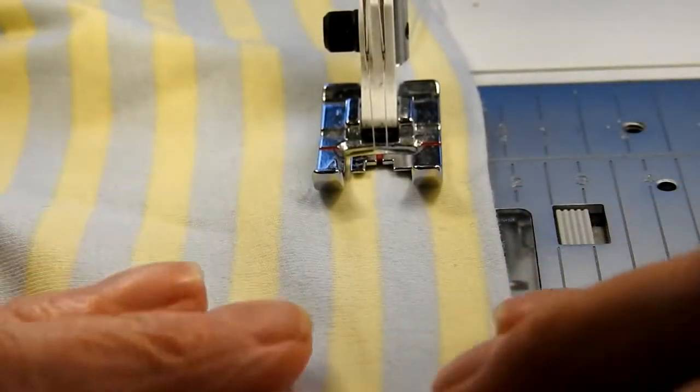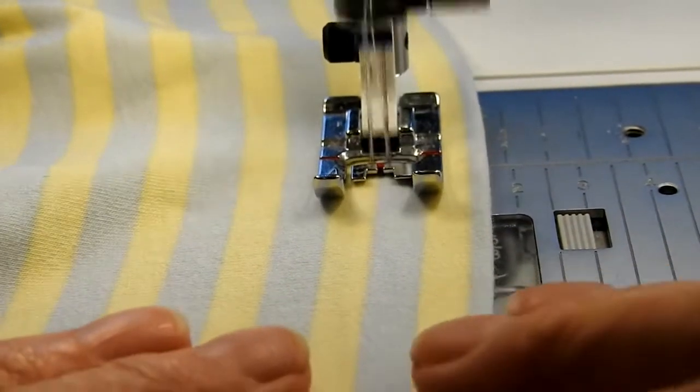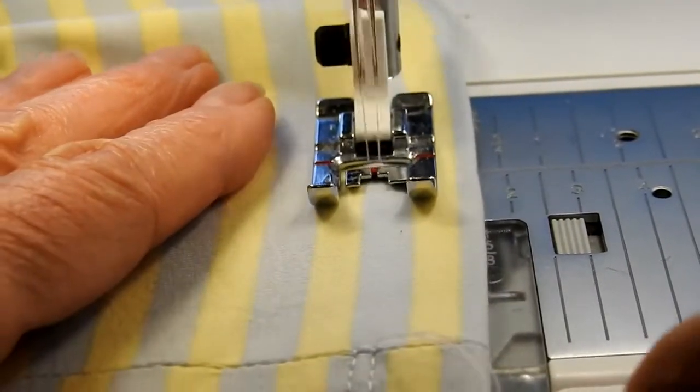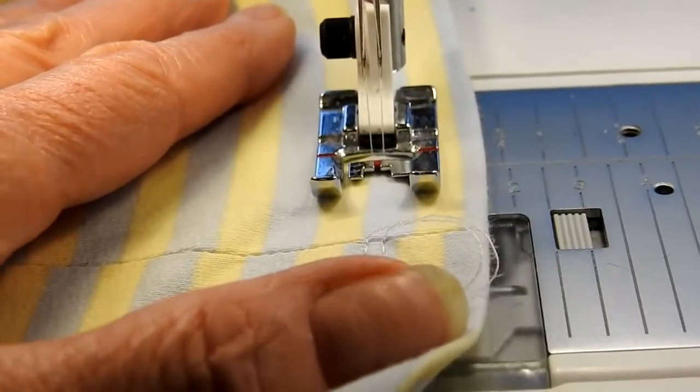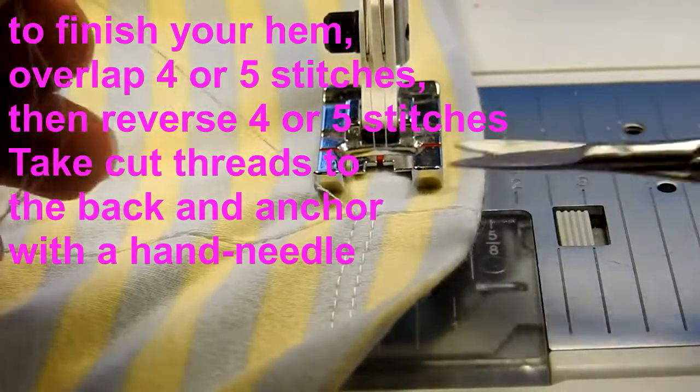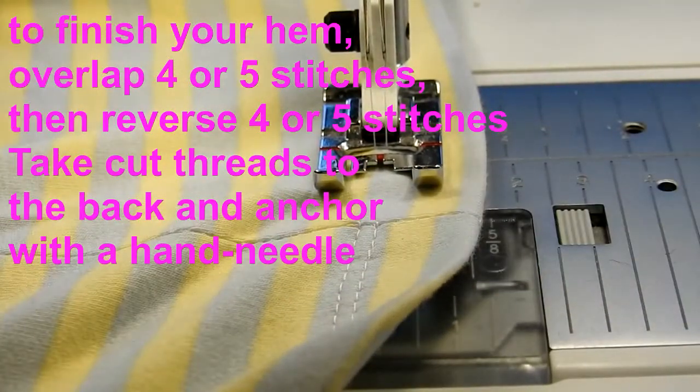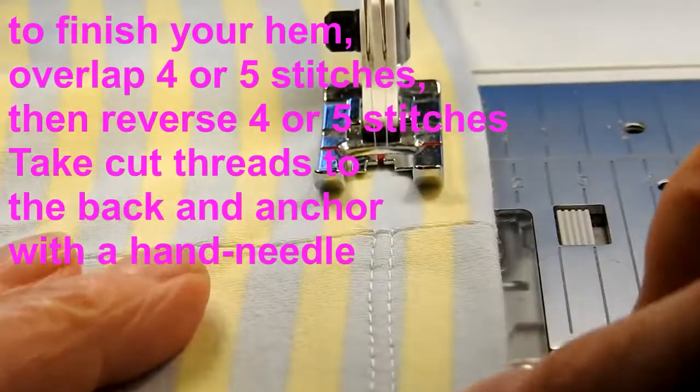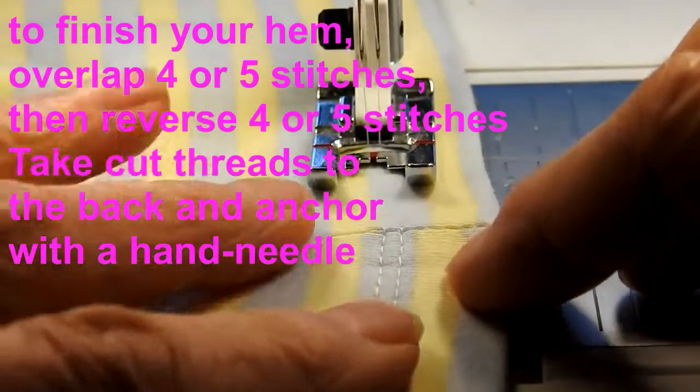We're getting close to the beginning where we started. When I get near that point I do cut my top threads even with the fabric. My idea is that I'm going to stitch right over top of my original line of stitching for four or five stitches.